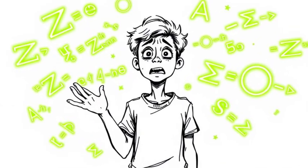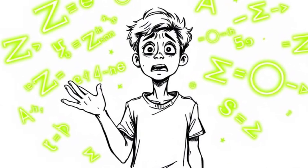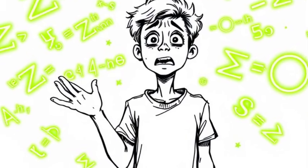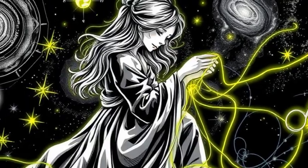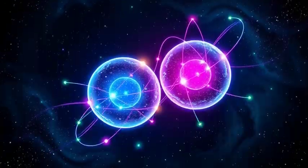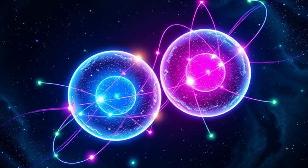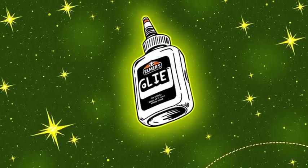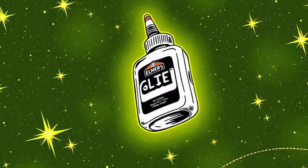Einstein comes in like, hey, time is stretchy. And quantum mechanics jumps in yelling, time isn't even consistent everywhere. Boom, minds exploded. So we think, okay, the universe must have some kind of mechanism that stitches this crazy story of time together. That's quantum glue, or at least the idea of it.